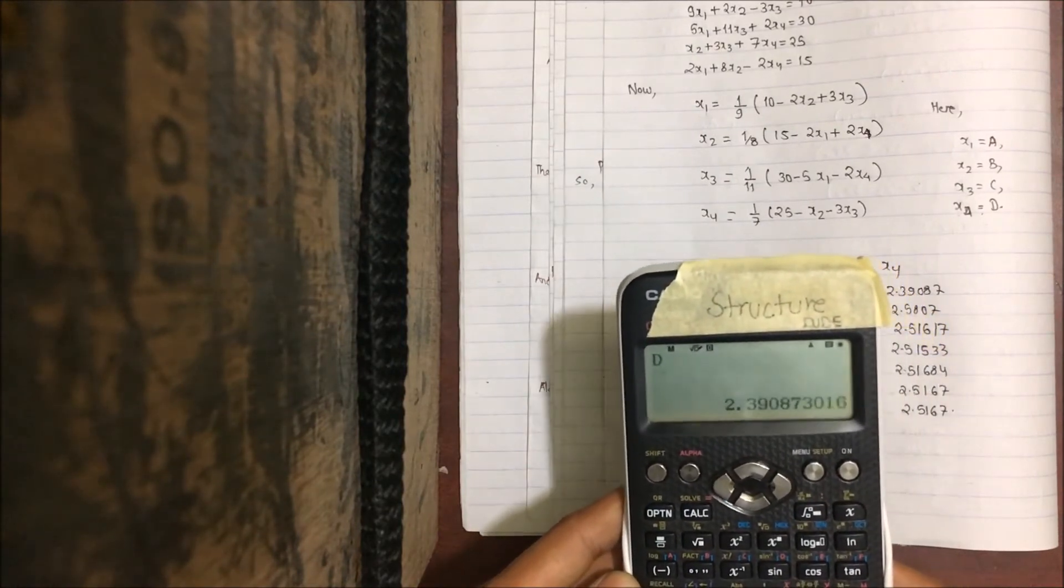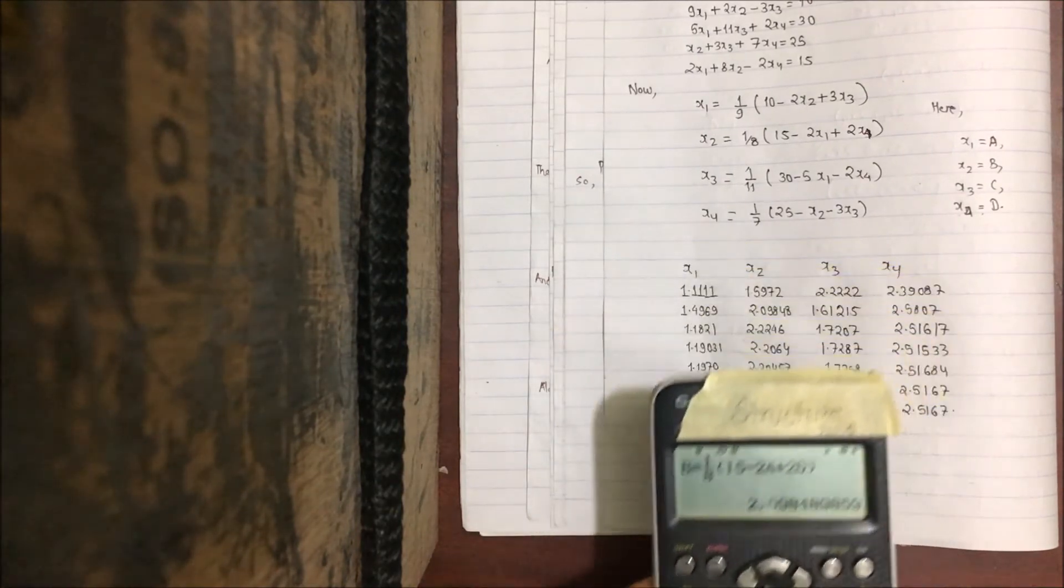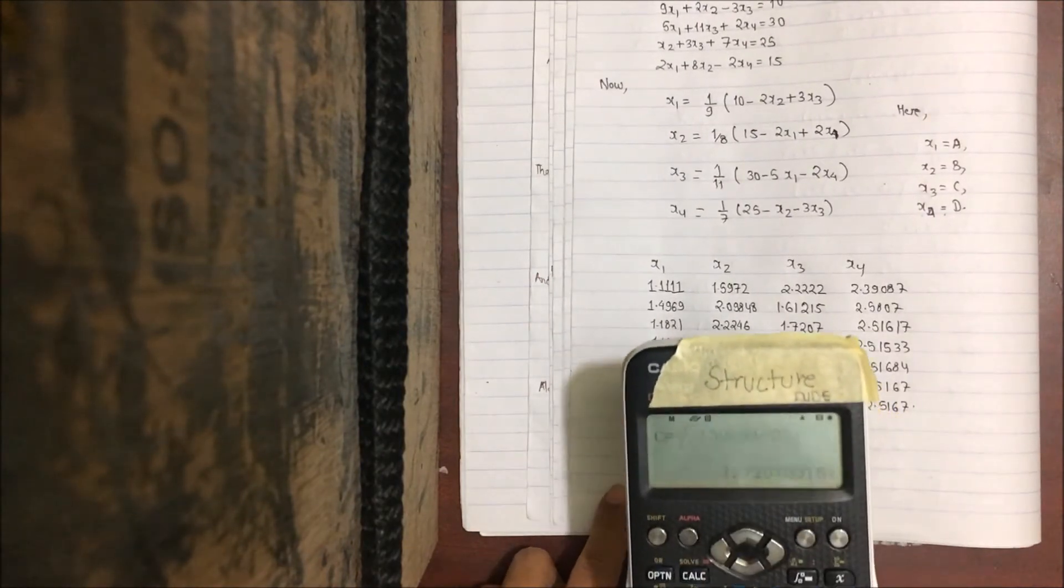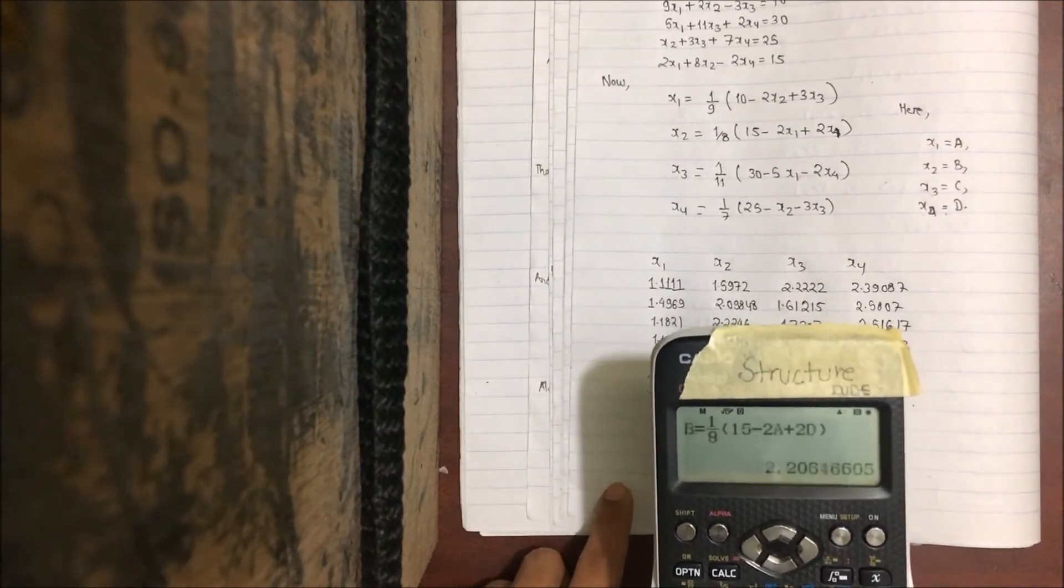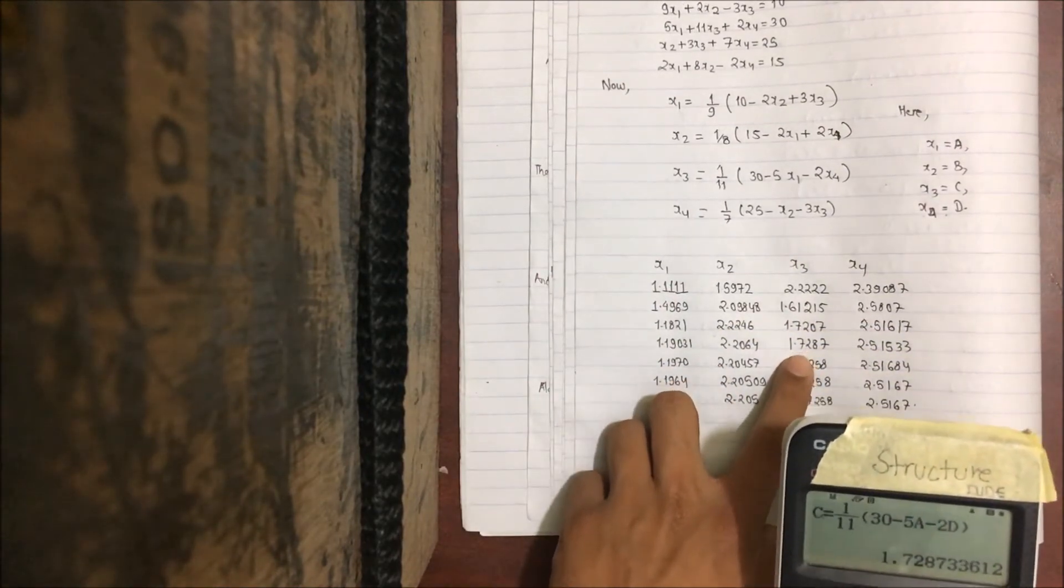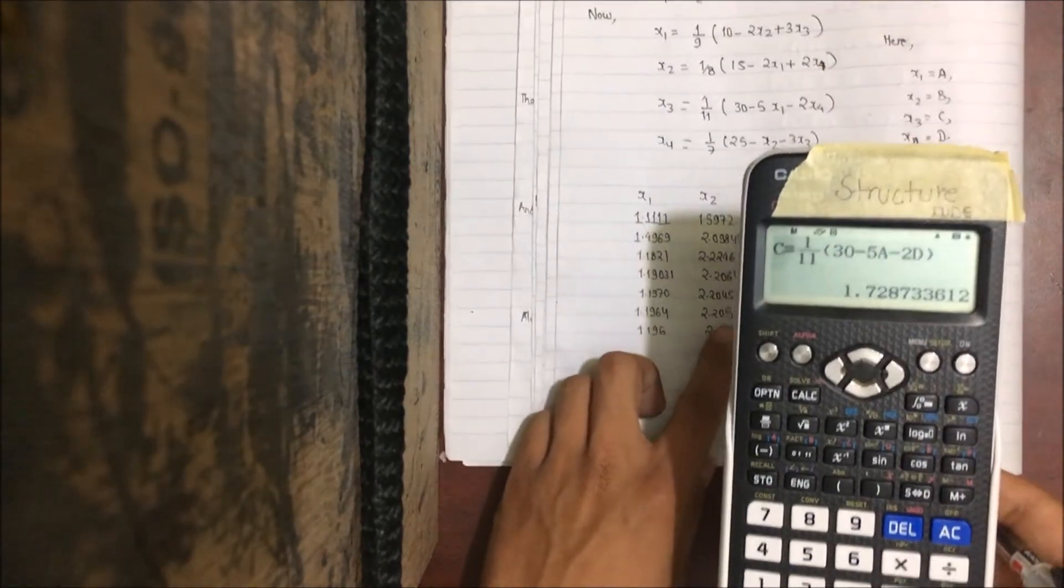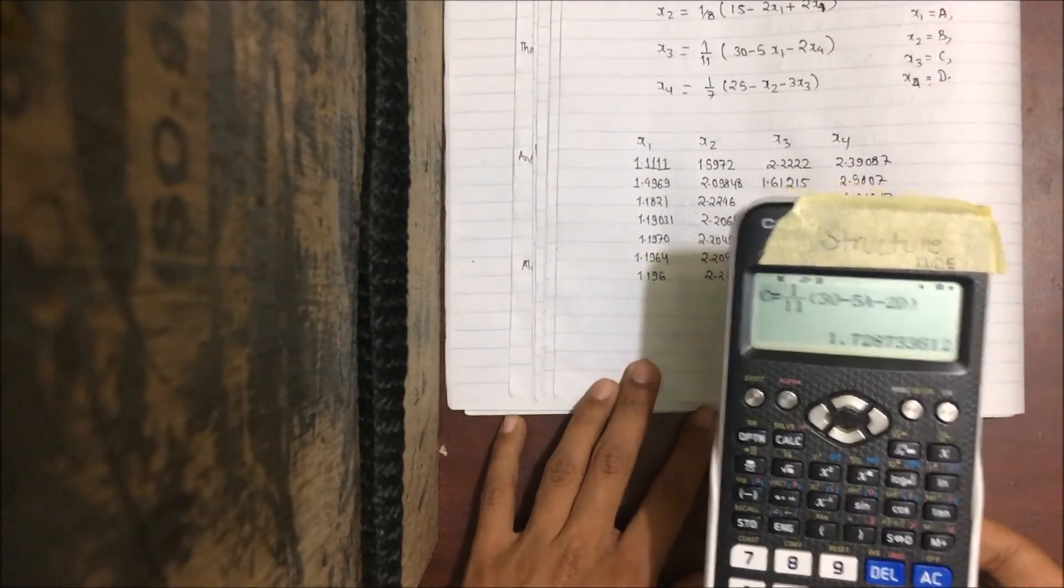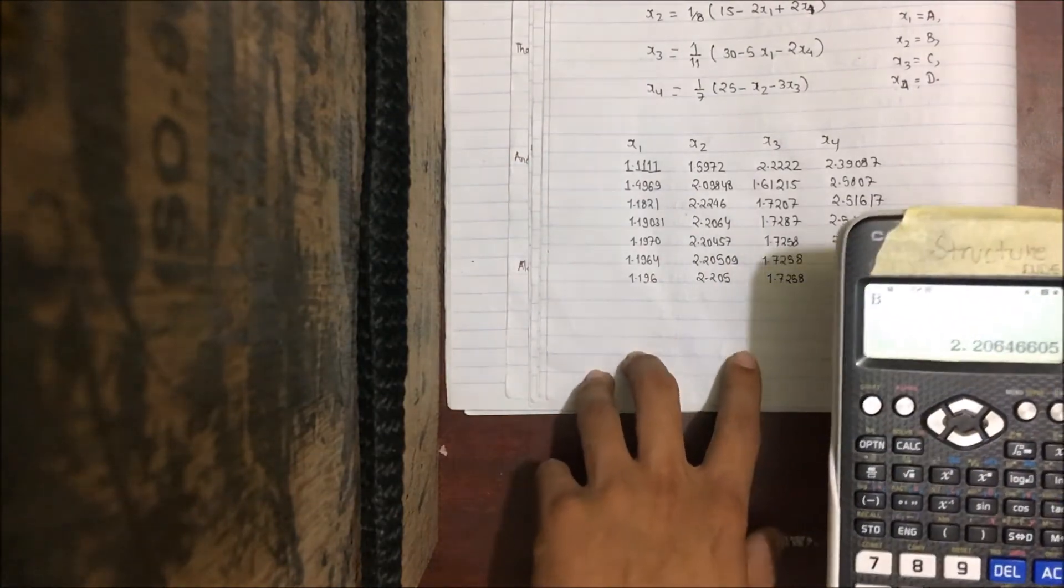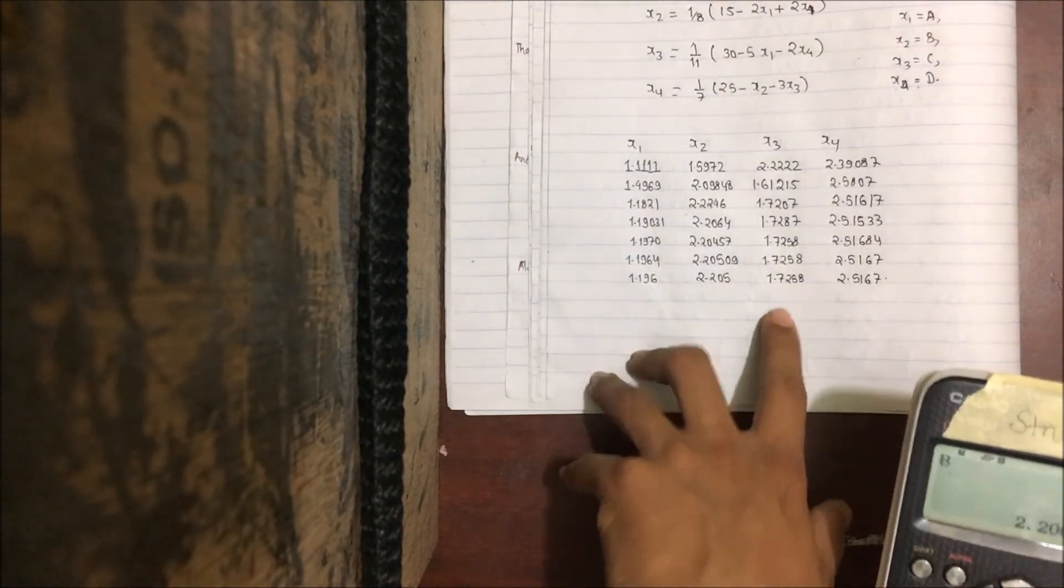The answer will appear in your display. Just carry on; you'll get values like 1.728. Continue using the equal sign, and the answer will be in your display. Carry on until the digits after the decimal are identical across iterations.